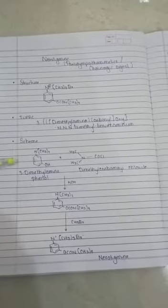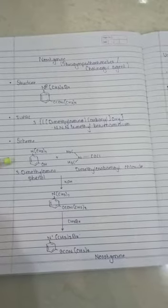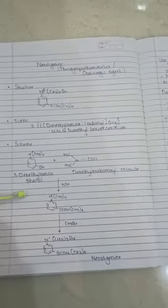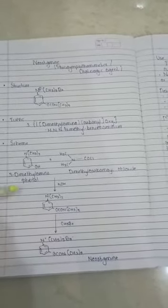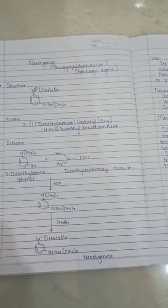For the synthesis scheme, the starting material is 3-dimethyl-aminophenol plus dimethyl-carbamyl chloride. They react with each other in the presence of KOH to form an intermediate. The intermediate further reacts with CH3-Br to form Neostigmine.